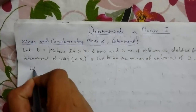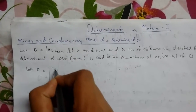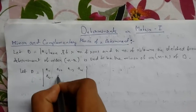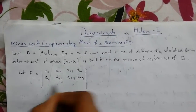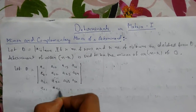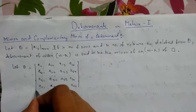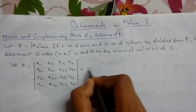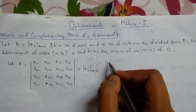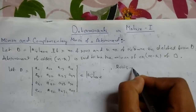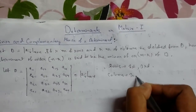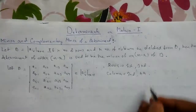Let me explain it by example. Suppose D is a determinant of elements a_ij of order 4x4, with elements a11, a12, a13, a14, a21, a22, a23, a24, and so on. Now suppose we need to find a minor — we will delete two rows and two columns. For rows, we delete the first row and the third row, and for columns we delete the third column and the fourth column.